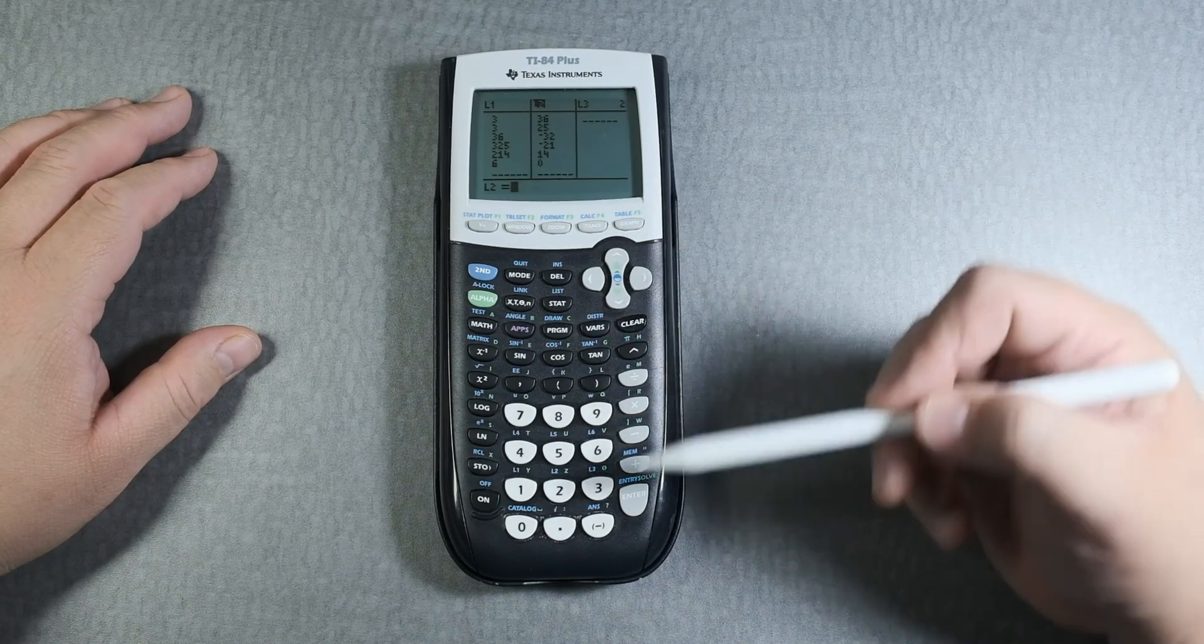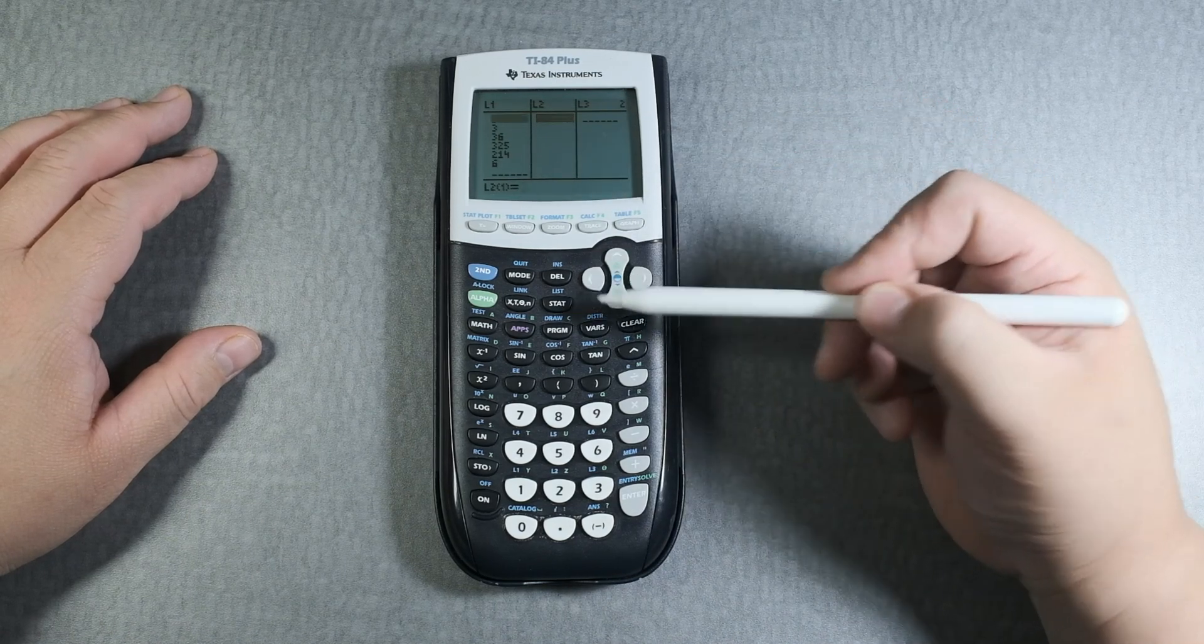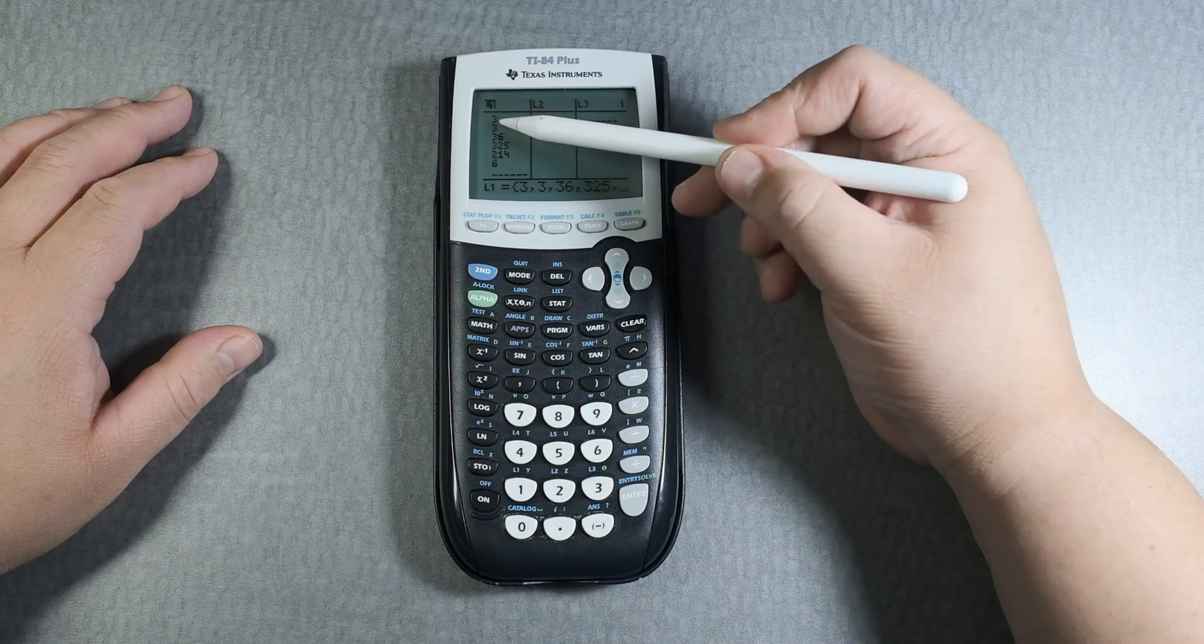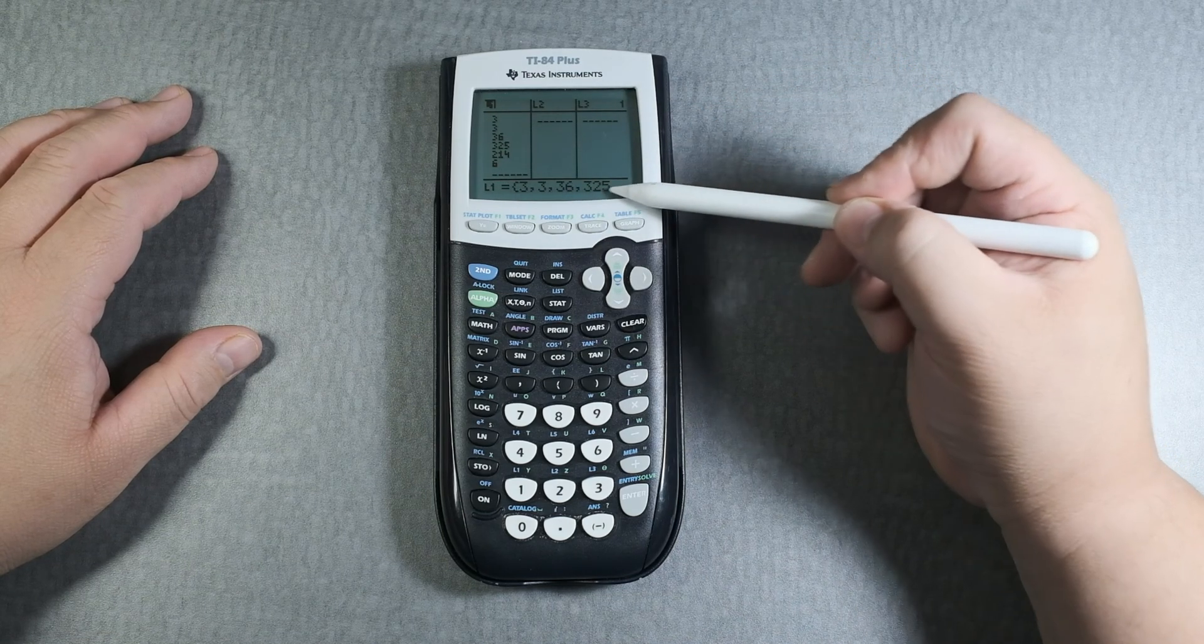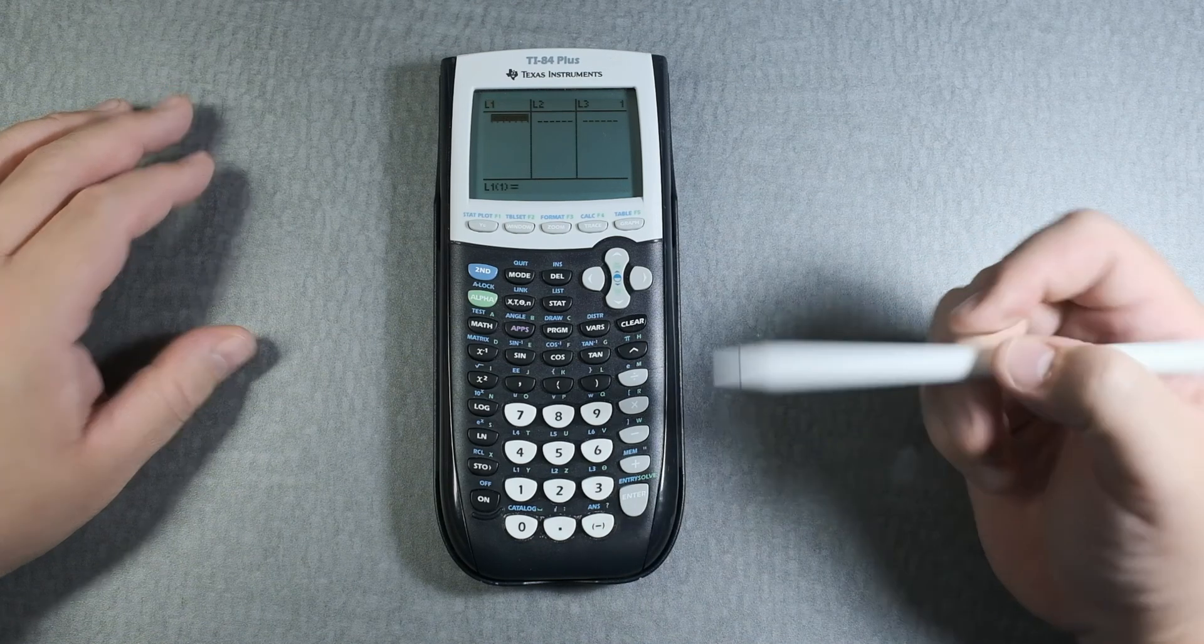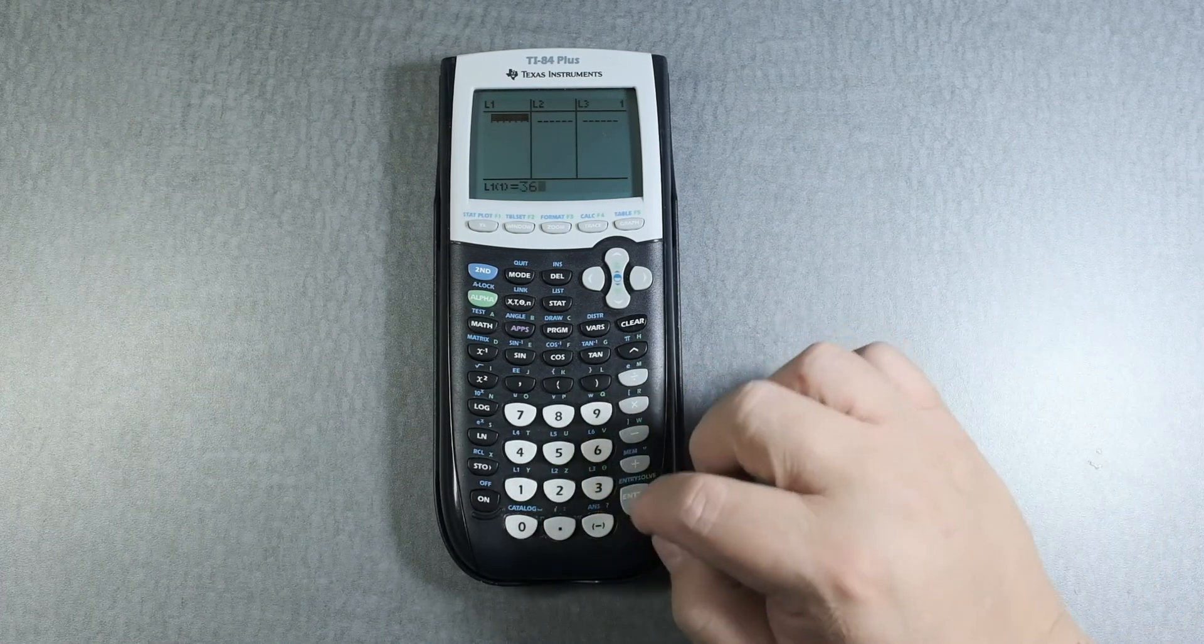You go over to the top, highlight the list, and you can see all the values are there. Then you press Clear and enter.